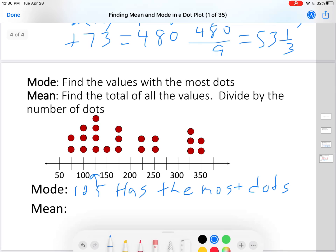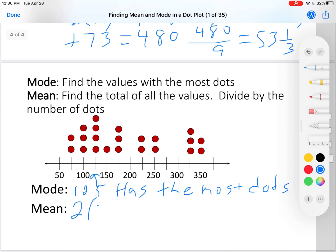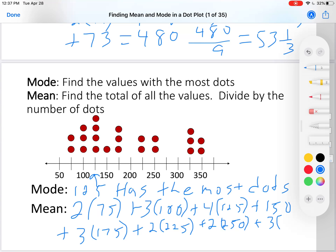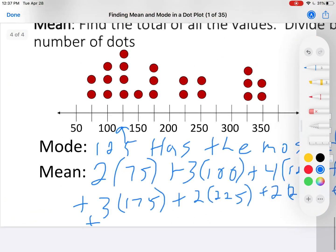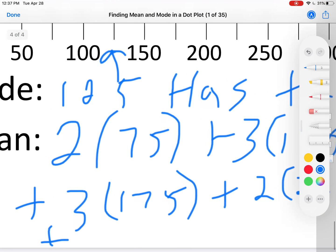Okay, there are two 75's plus three 100's plus four 125's plus 150 plus three 175's plus two 225's plus two 250's plus two 350's.